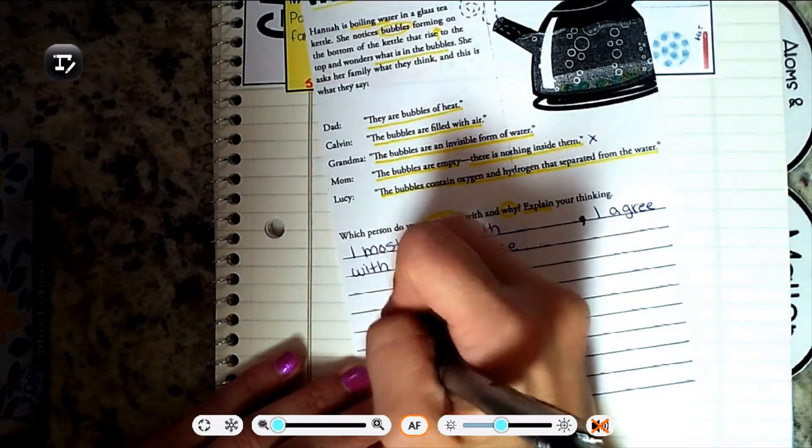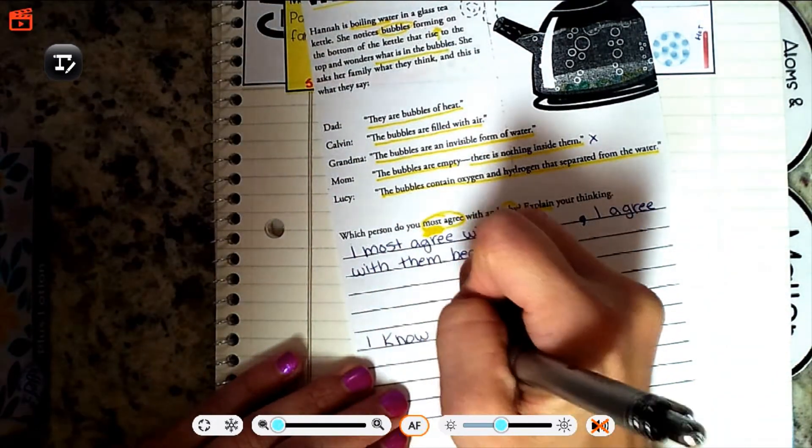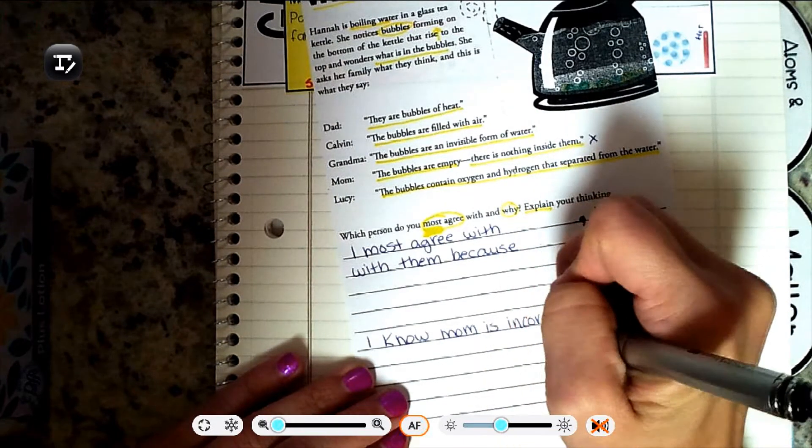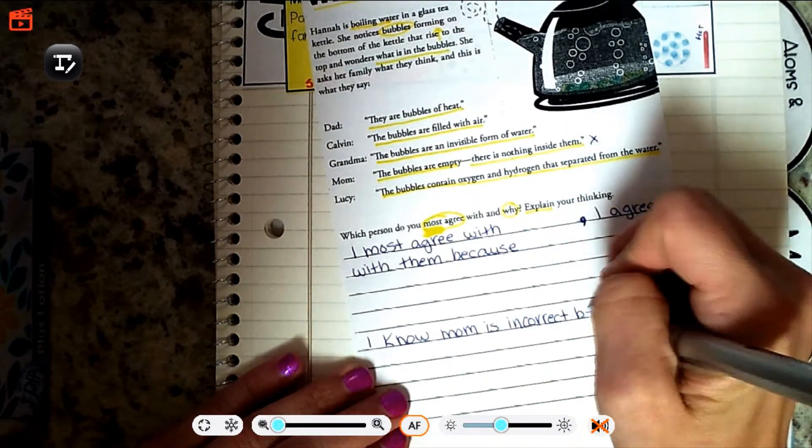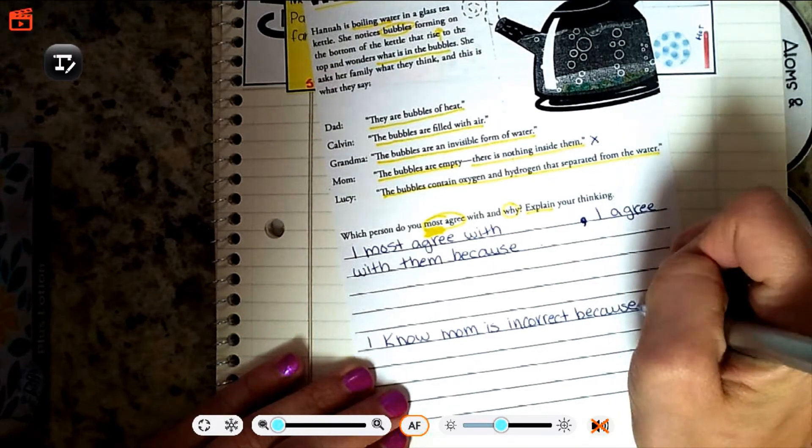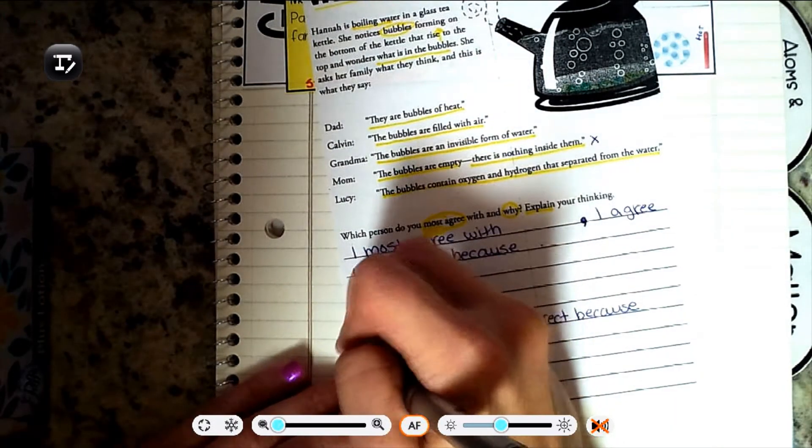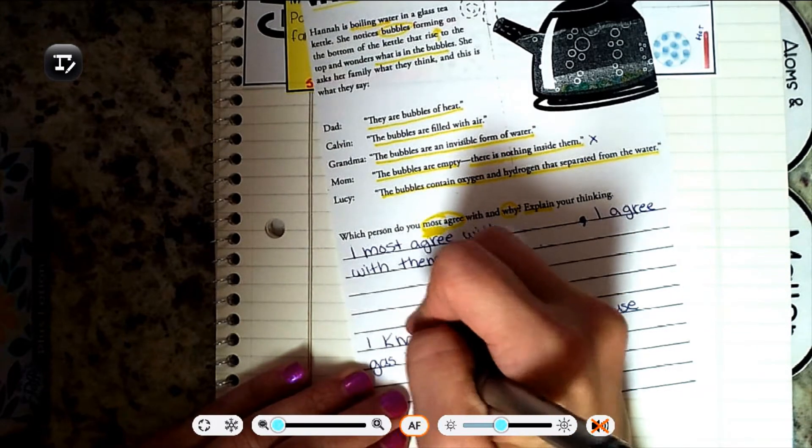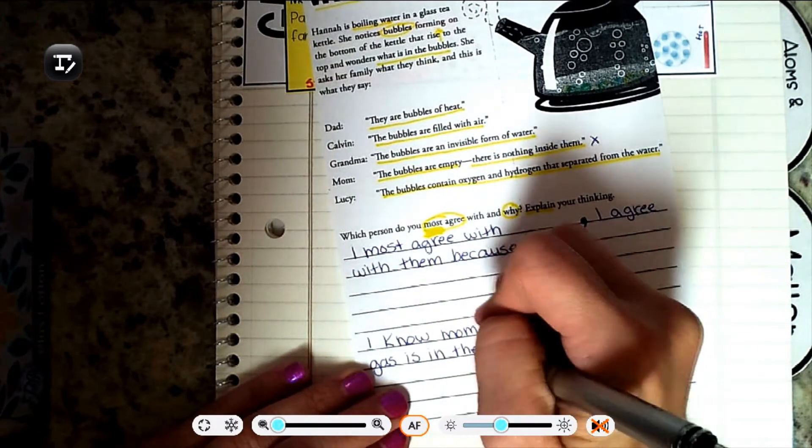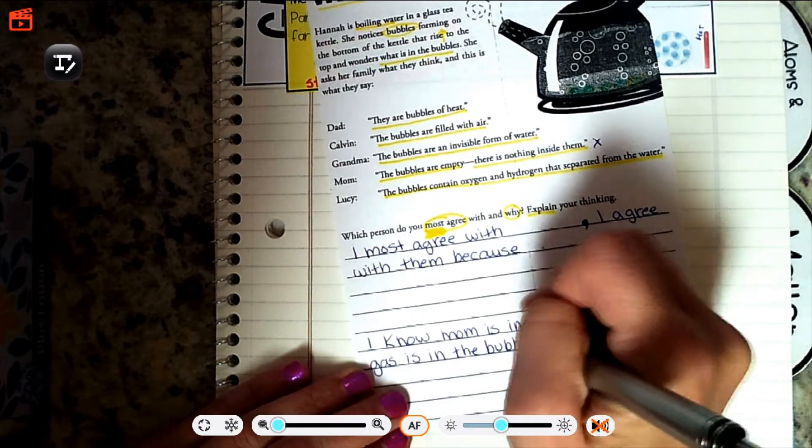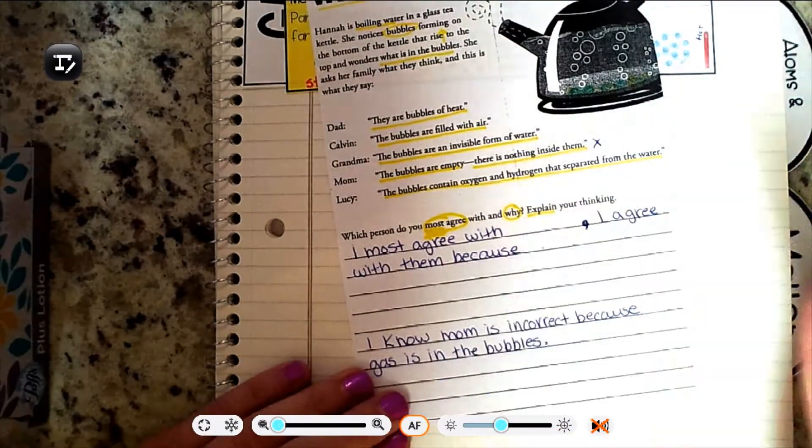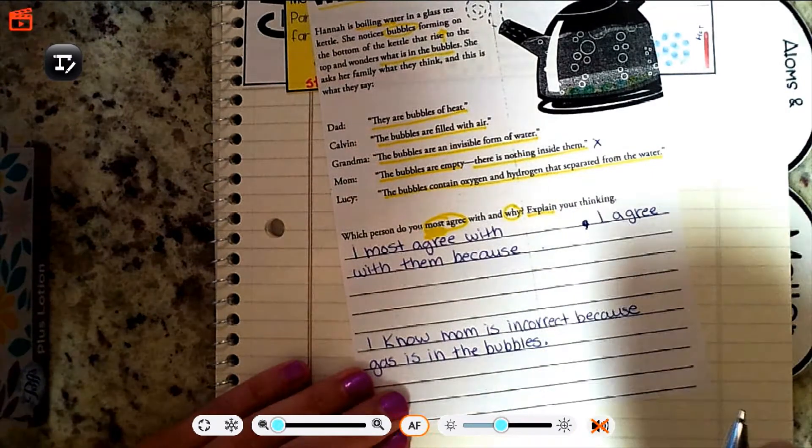I could say something like, I know mom is incorrect because gas is in the bubbles so they can't be empty. Just because it's gas and invisible doesn't mean it's empty. You could say why somebody else you think is wrong. You can put my sentence as well.